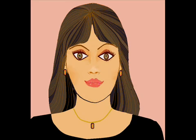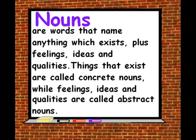Hi, I'm Crystal. Here is some information about countable and uncountable nouns. Nouns are words that name anything which exists, plus feelings, ideas and qualities. Things that exist are called concrete nouns, while feelings, ideas and qualities are called abstract nouns.